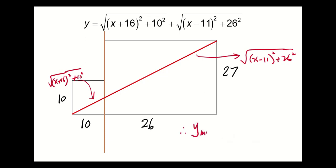And in this case, we'll have the minimum value of y. And the value should be equal to √(36² + 27²).